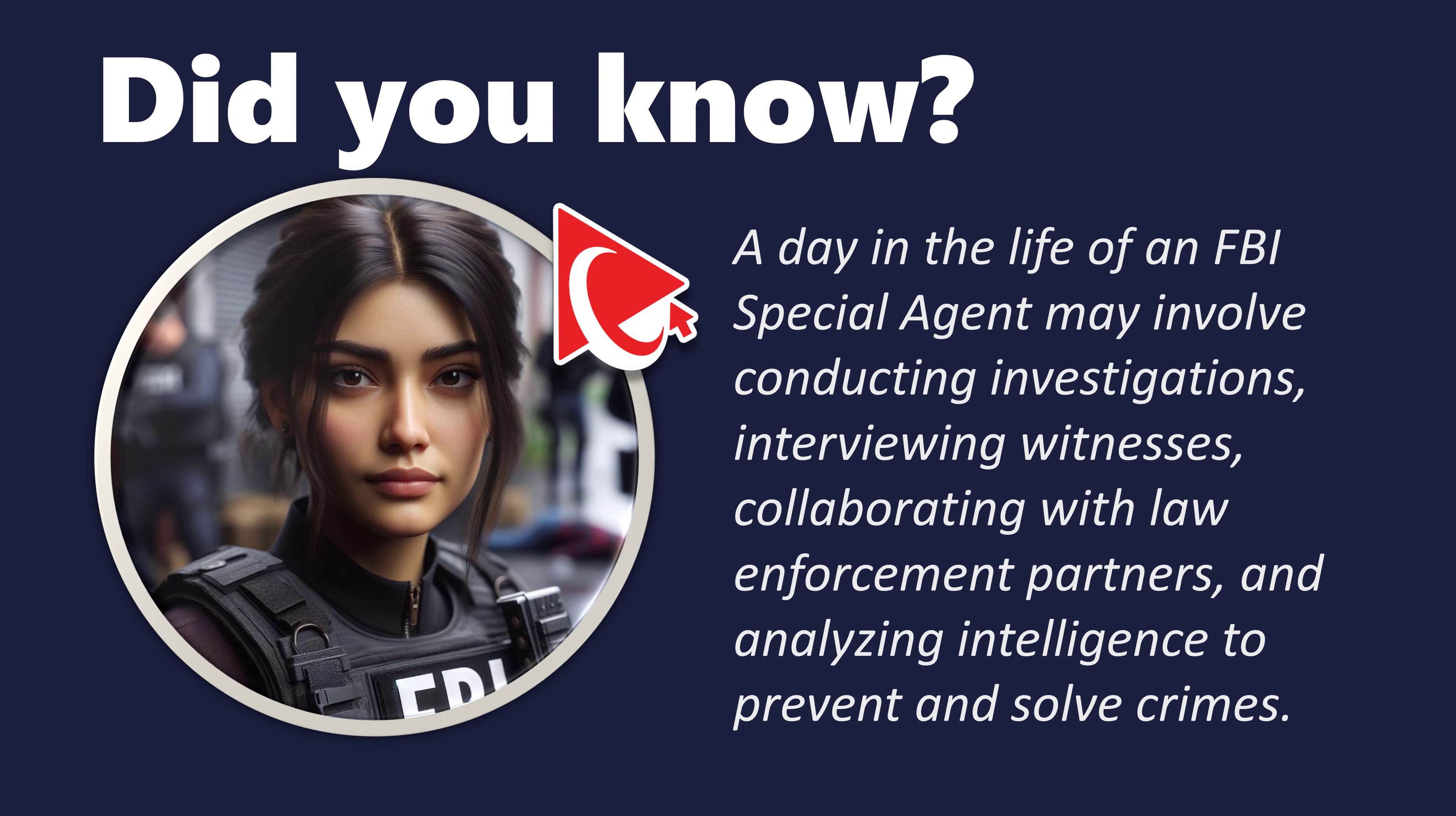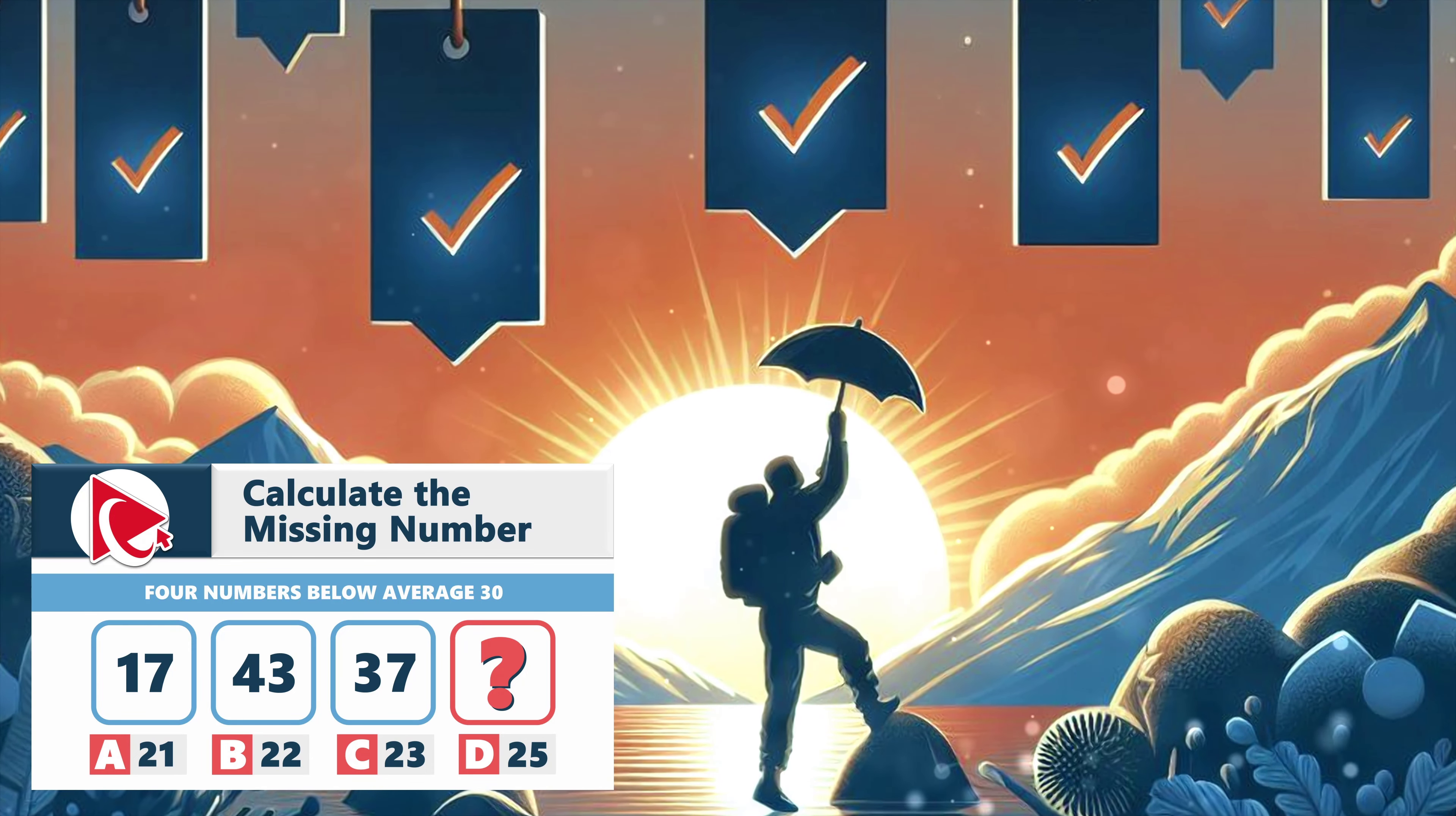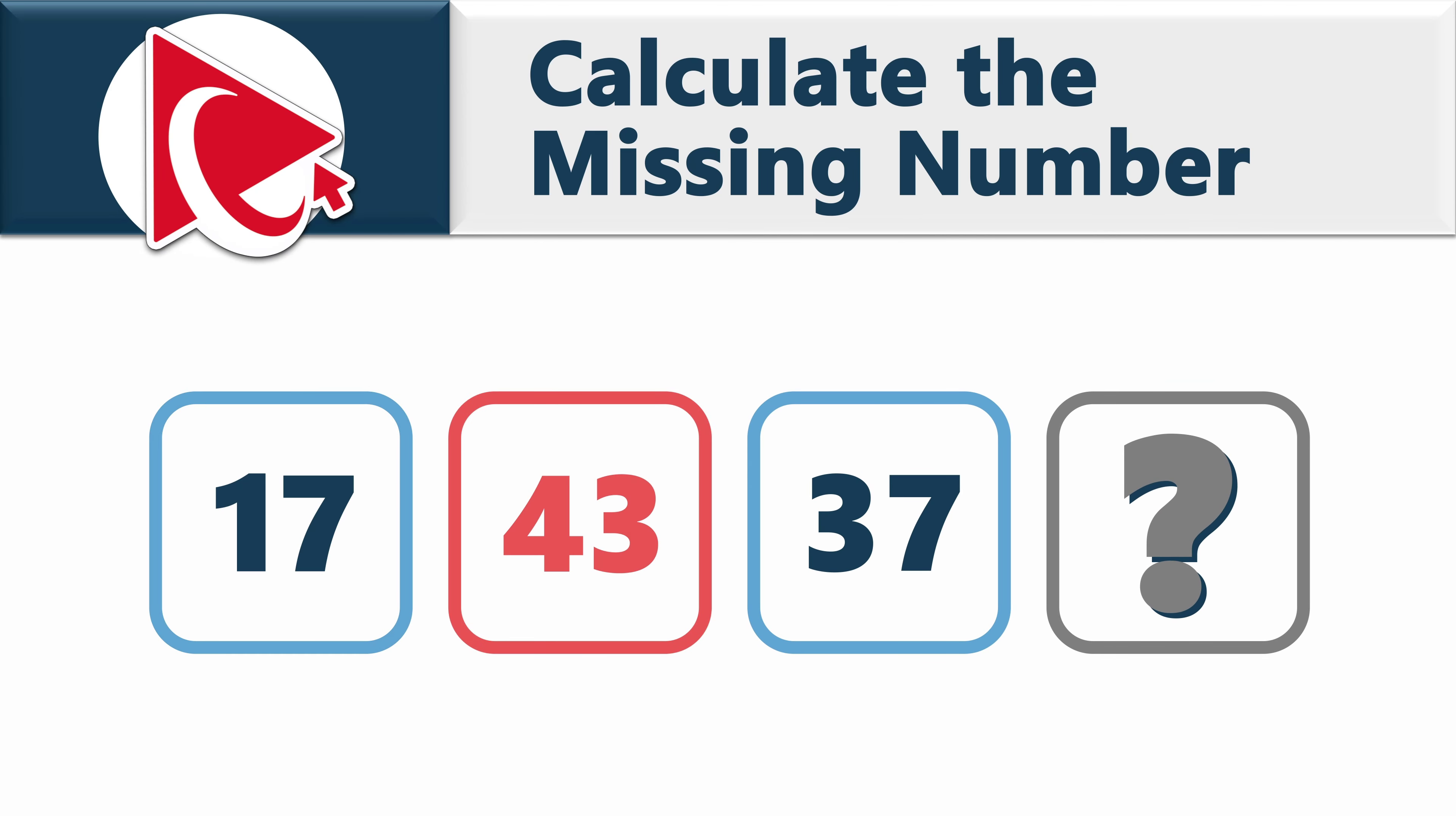With this question, I would like to echo the wisdom of Eleanor Roosevelt: You gain strength, courage, and confidence by every experience in which you really look fear in the face. You are presented with four numbers: 17, 43, 37, and the missing number you need to calculate, knowing that all four numbers average 30.